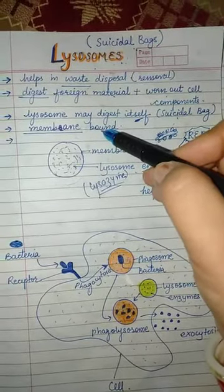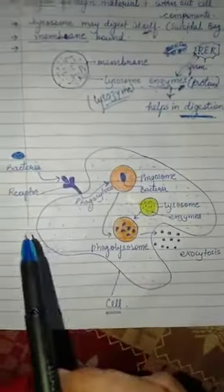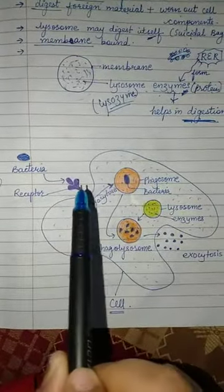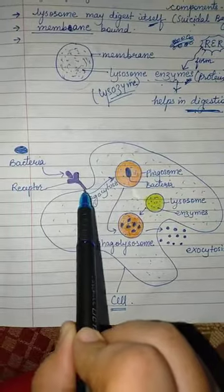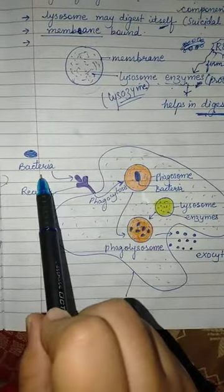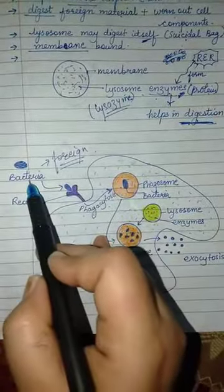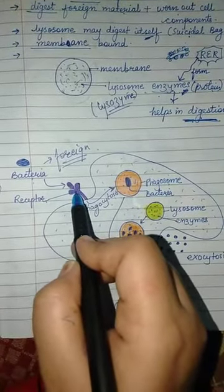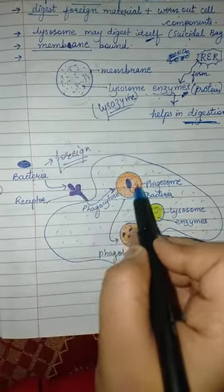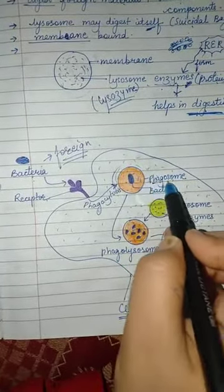Now see this diagram. This is a particular cell, and this cell has a receptor. A receptor is like an antenna — it receives signals. Similarly, here a bacteria has bound to this receptor. Bacteria is a foreign material coming into our body. This bacteria has bound here at the receptor. Now there is a particular structure present in the cell called phagosome.